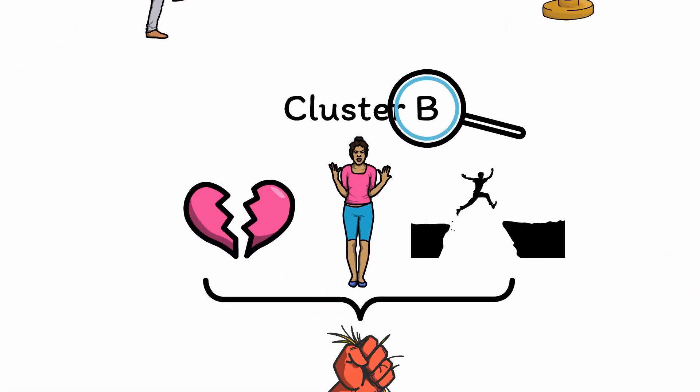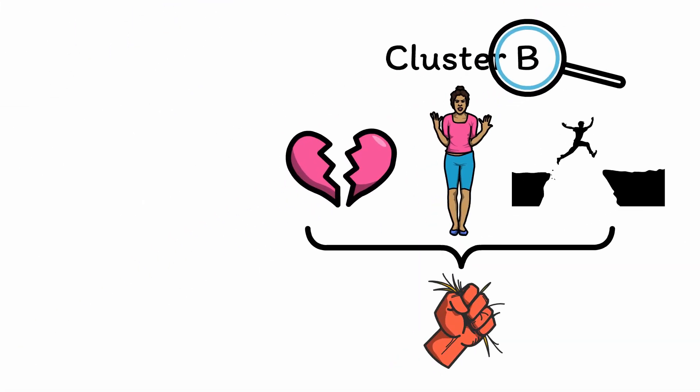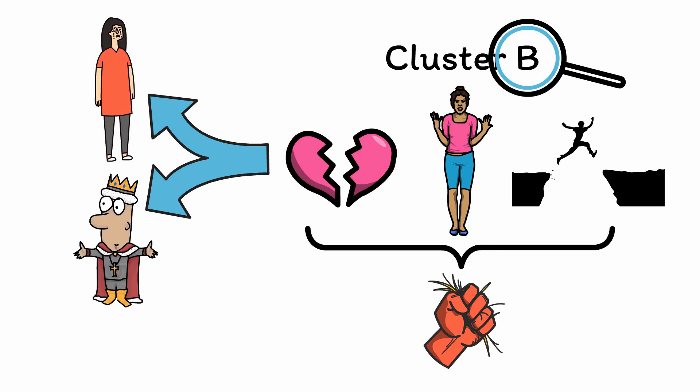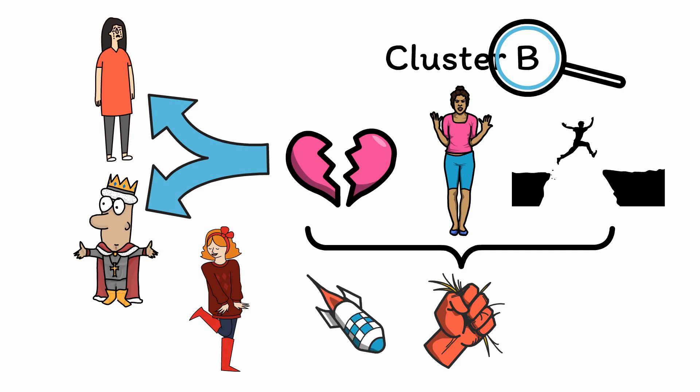Putting this entire picture together, ASPD is revealed to have the same core cluster B-ness as borderline, narcissistic, and even to a certain extent histrionic personality disorder. While aggression is undoubtedly a more destructive way of coping with negative emotions, the overall pattern is the same. Now that we have an understanding of both the diagnostic criteria and the reasons why patients engage in this behavior, let's look at the data behind this disorder — including who's diagnosed with it, what happens once they're diagnosed, and what forms of treatment are effective.